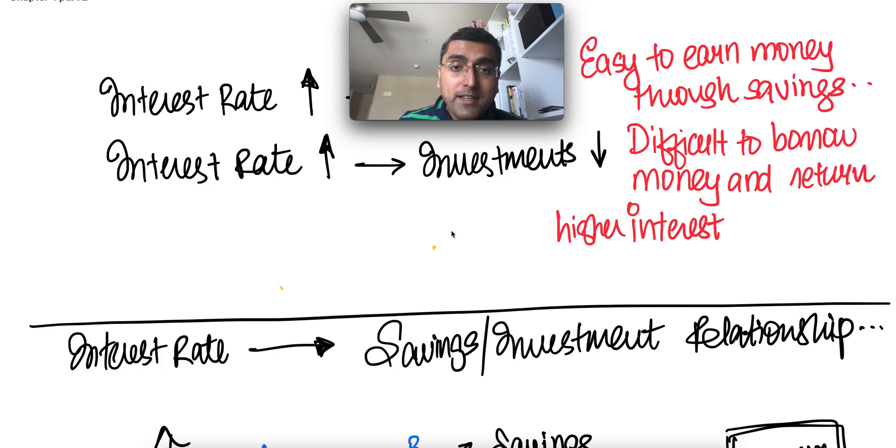So the mortgage rate, if it goes up, the house all of a sudden becomes more expensive. So it's difficult to borrow money and return higher interest rate to your lender. And when interest rate goes up, investments go down. That's intuitively how we know those two relationships.